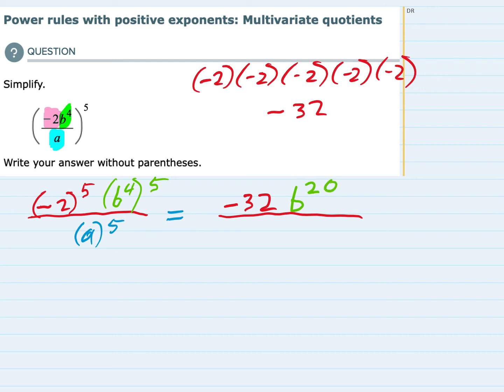We apply the same rule to the bottom. I've got essentially a to the 1 inside parentheses being raised to the fifth. Multiply the 1 and the 5 and that is a to the fifth.